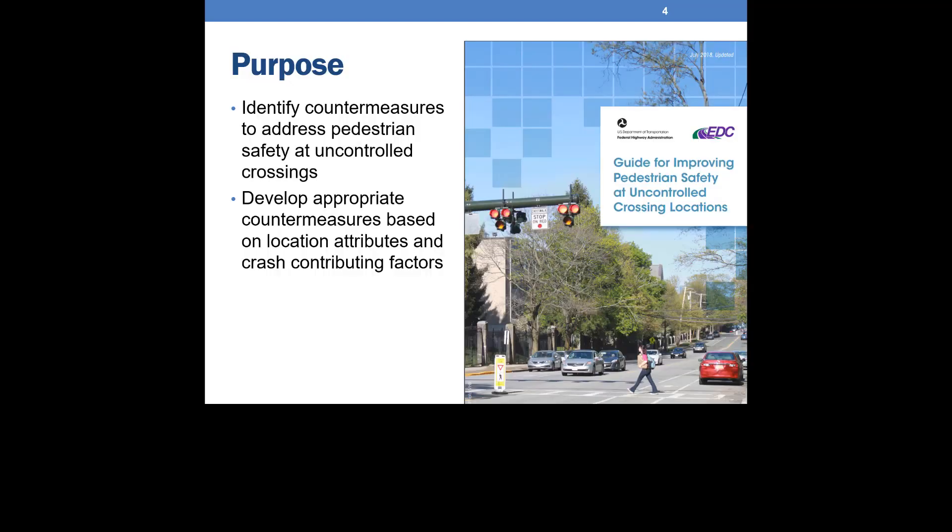The guide can help you to identify, understand, and consider countermeasures to address pedestrian safety on controlled pedestrian crossing locations. Following the process in the guide, you can develop a list of possible countermeasure options based on road conditions, crash contributing factors, and pedestrian safety issues. By fully considering all potential pedestrian safety countermeasures for an uncontrolled crossing, you can improve safety for pedestrians of all ages.